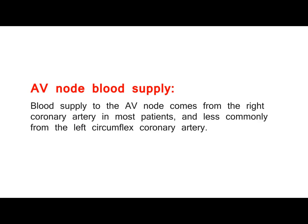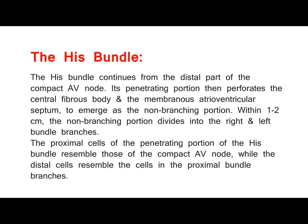Blood supply to the AV node comes from the right coronary artery in most patients, and less commonly from the left circumflex coronary artery. The HIS Bundle continues from the distal part of the compact AV node. Its penetrating portion perforates the central fibrous body and the membranous atrioventricular septum to emerge as the non-branching portion. Within 1 to 2 cm, the non-branching portion divides into the right and left bundle branches. The proximal cells of the penetrating portion resemble those of the compact AV node, while the distal cells resemble the cells in the proximal bundle branches.